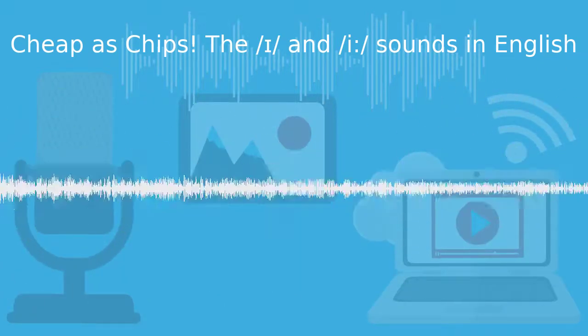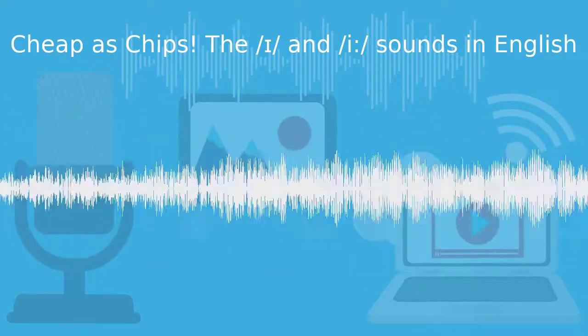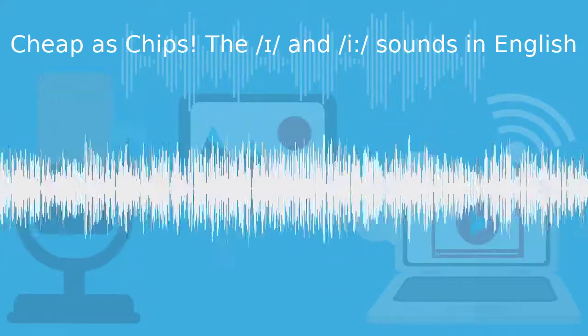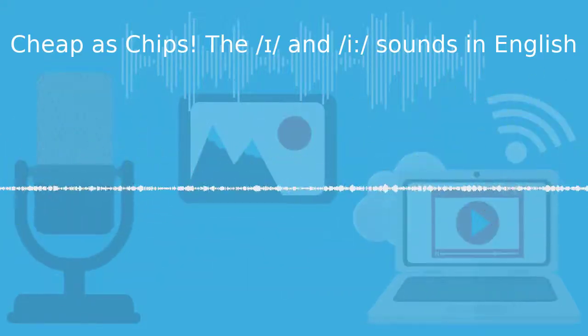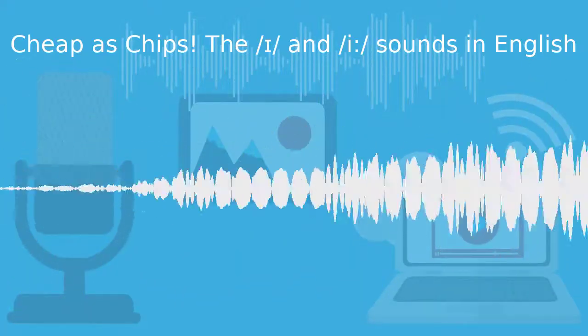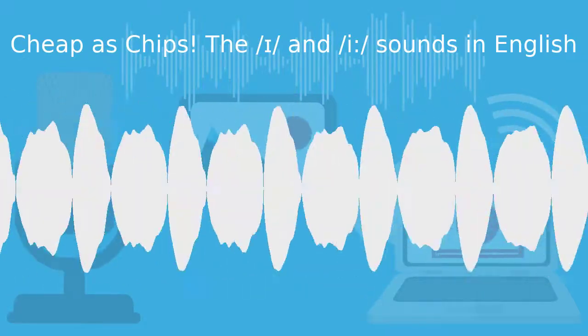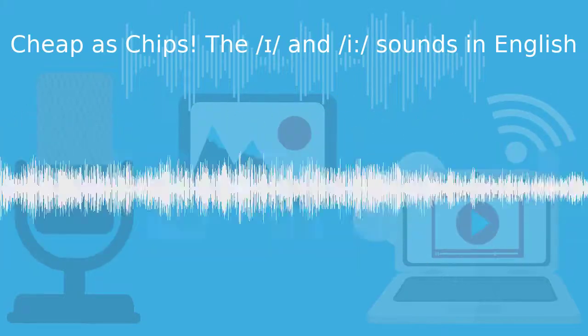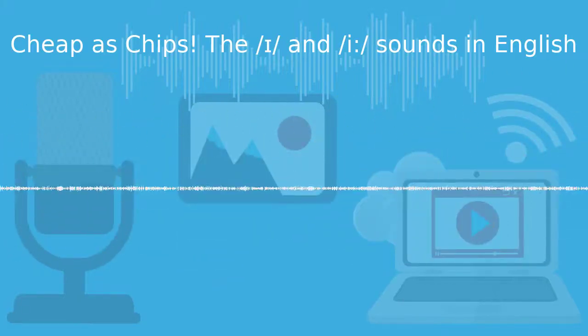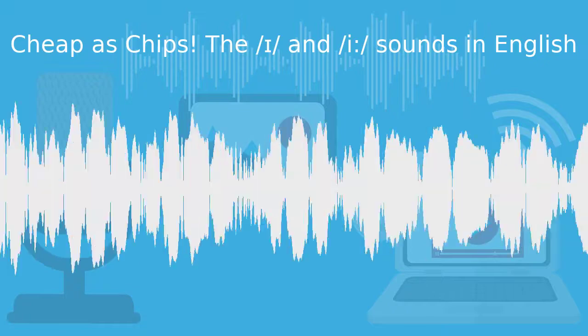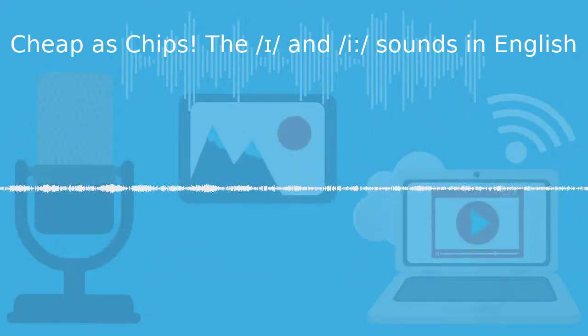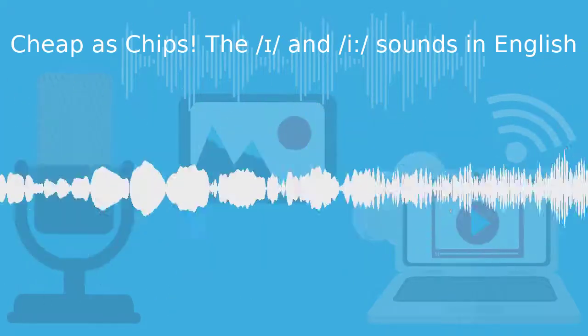So finally, we're going to practice contrasting the sounds and we'll move on to look at some minimal pairs and sentences. Firstly, just the sounds themselves, I, E. We're going to start off by really exaggerating that difference in length even further than we need to. And noticing the movement of your tongue and your lips between the two sounds.